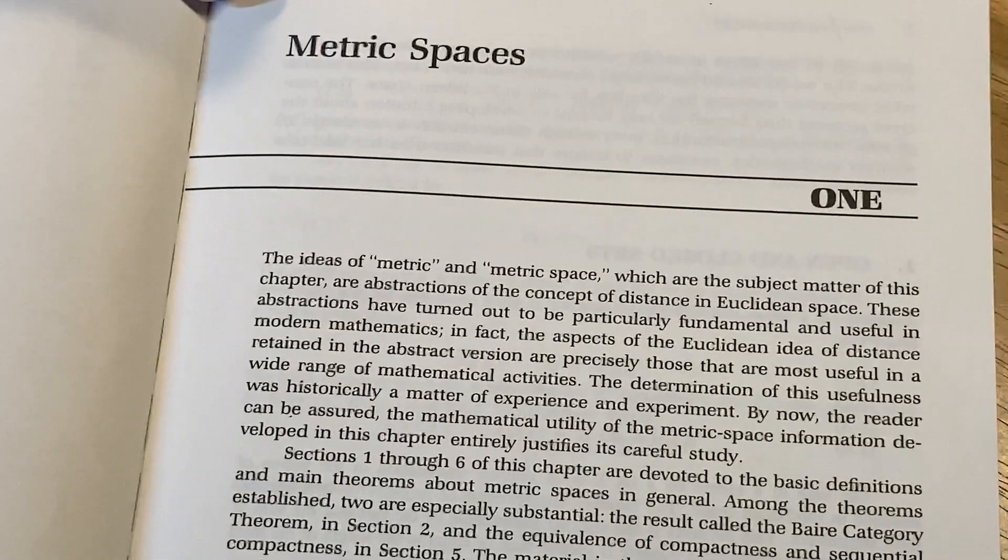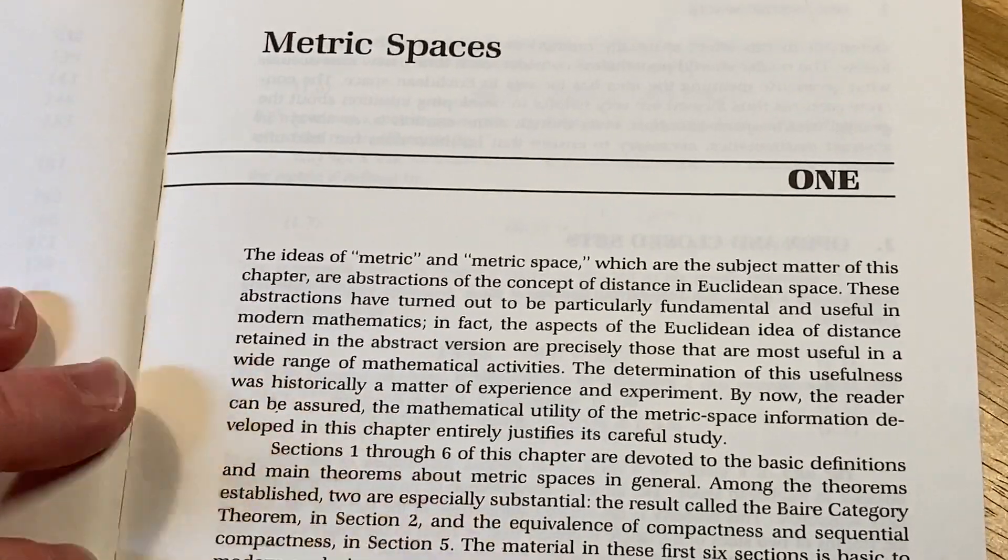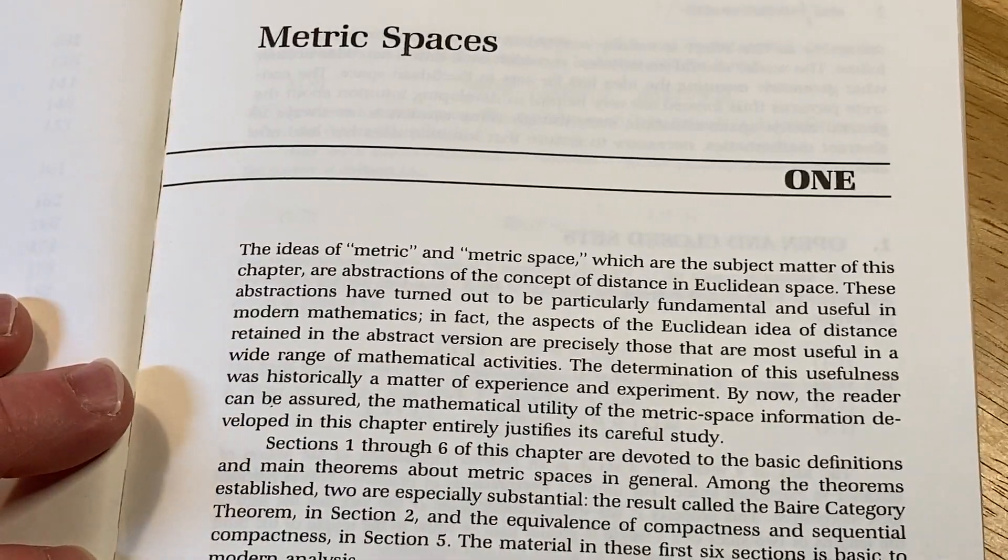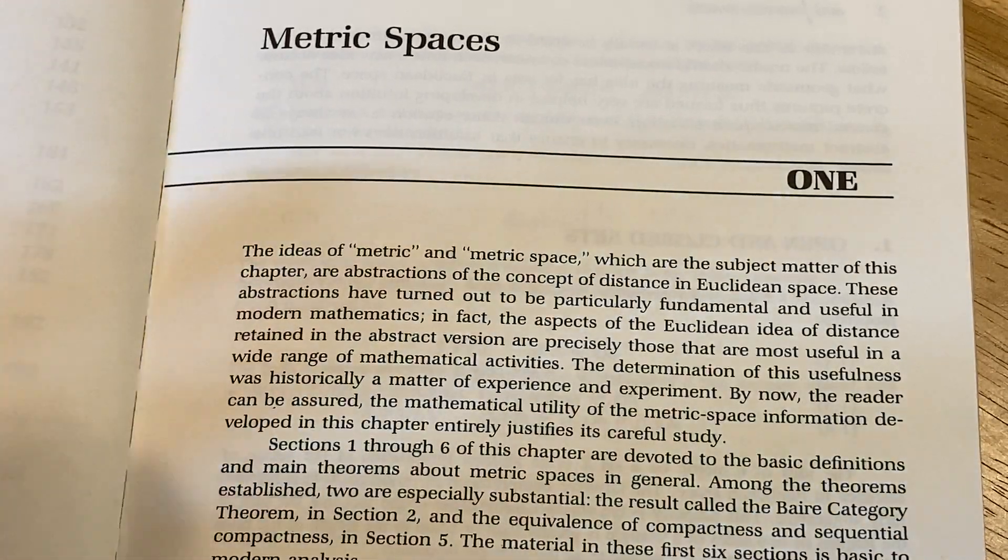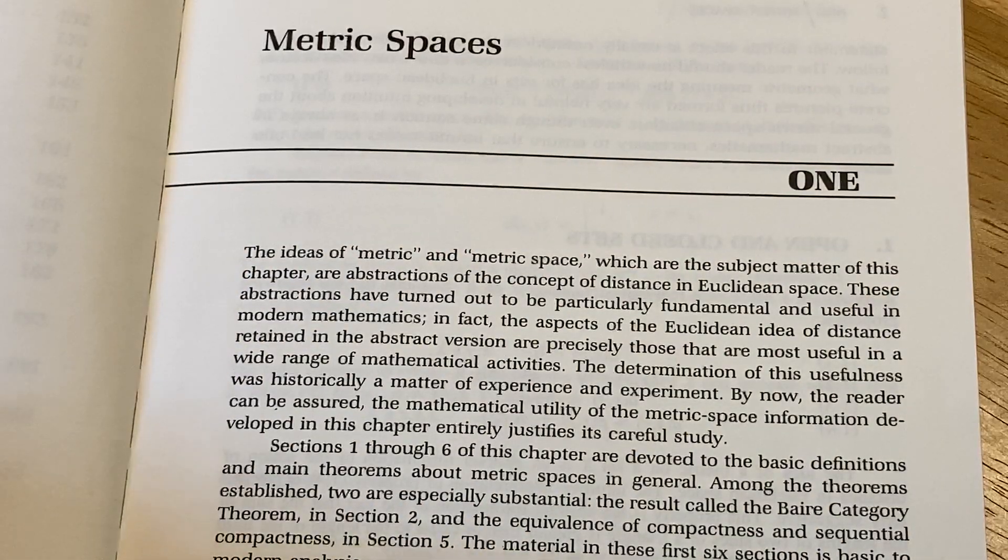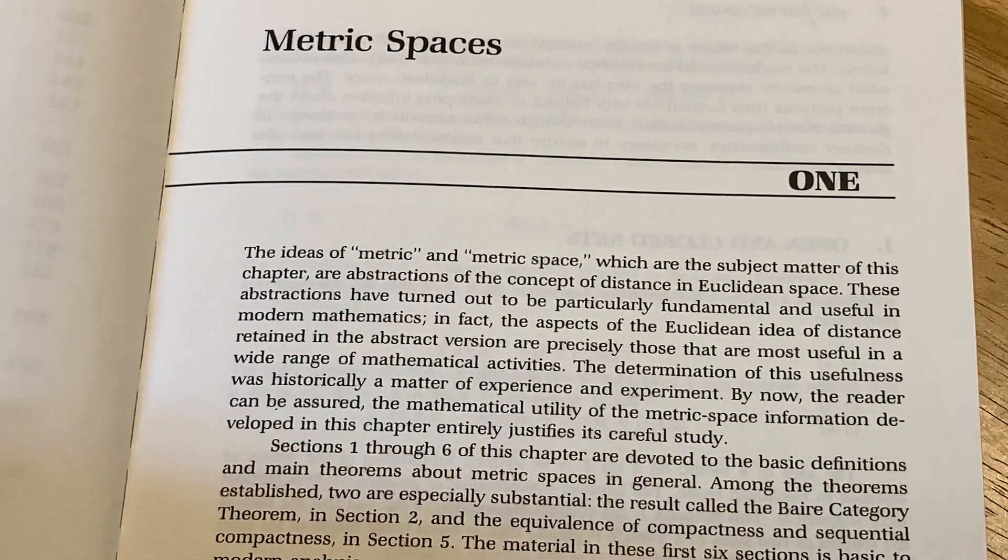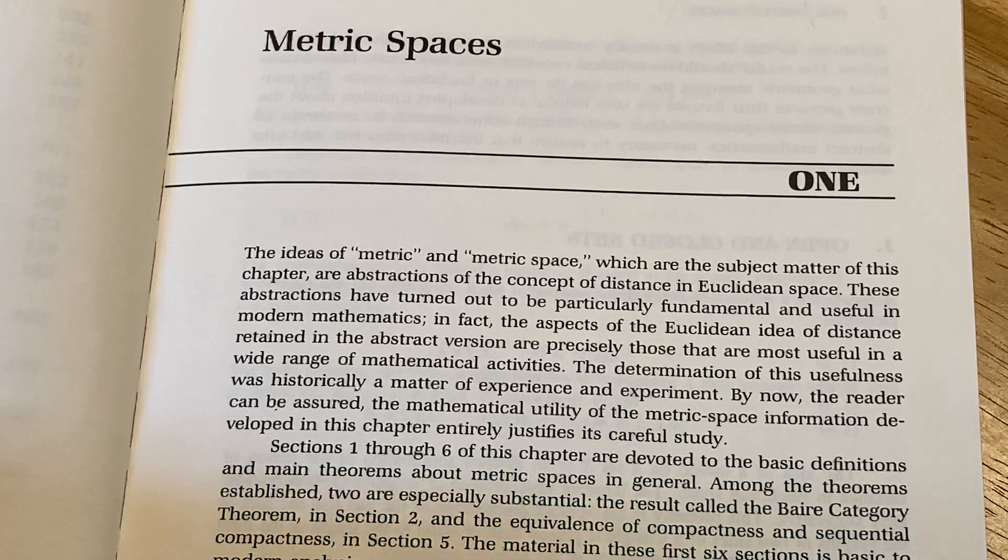Metric spaces, it says here. Let's read this. The ideas of metric and metric space, which are the subject matter of this chapter, are abstractions of the concept of distance in Euclidean space. Basically, a metric space is a set with a distance function. These abstractions have turned out to be particularly fundamental and useful in modern mathematics.